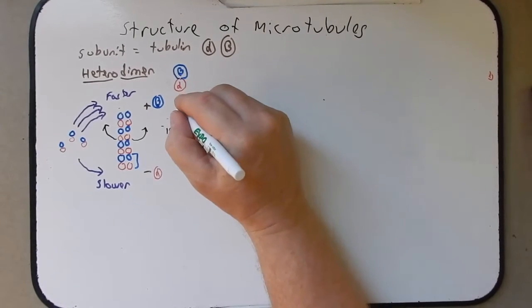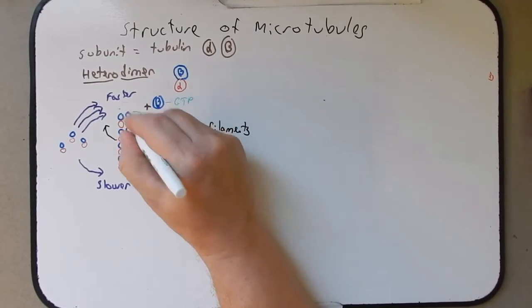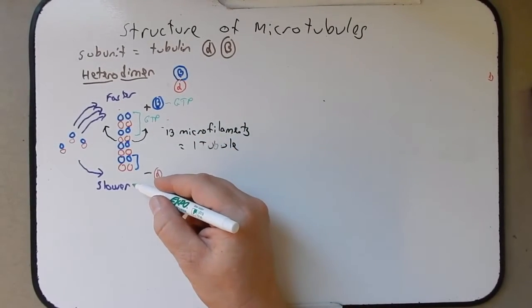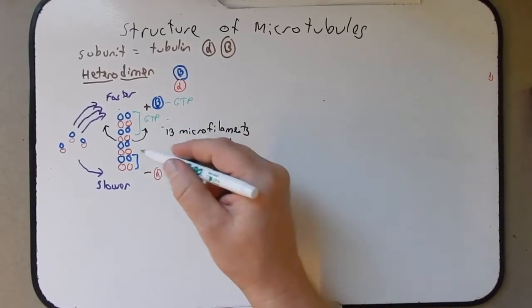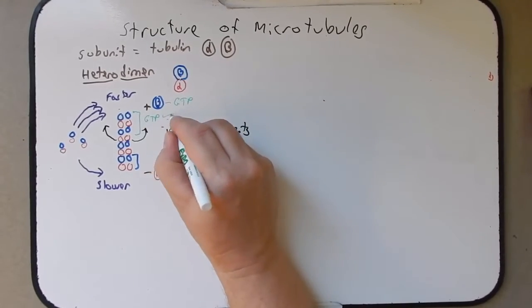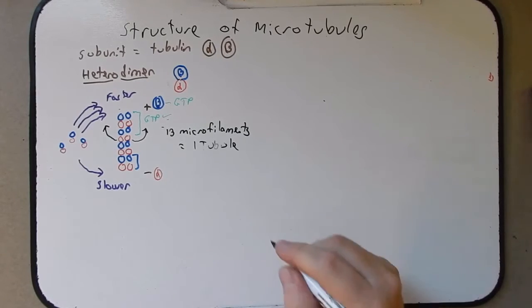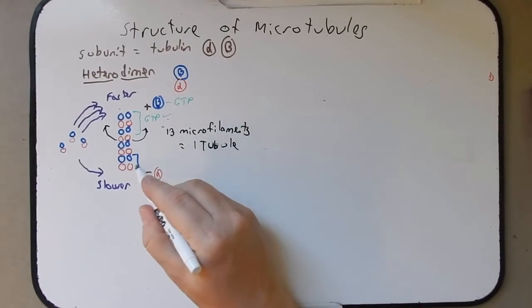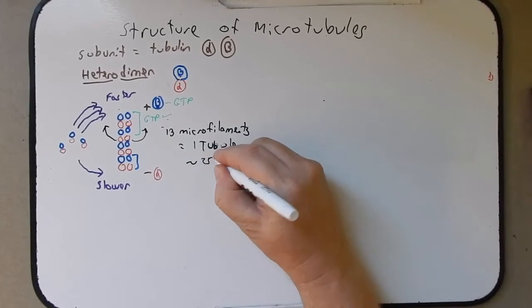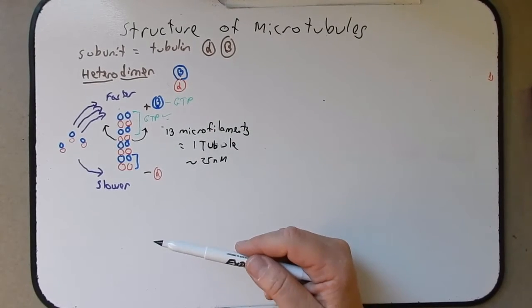The beta subunit can bind to GTP. The plus end of the microtubule typically contains a lot of GTP-bound beta subunits. As we move down toward the negative end, there are fewer beta subunits with GTP — often it's been hydrolyzed. To maintain the tip so it can keep growing, we need the GTP; GTP-bound beta tubulin allows it to grow faster at the positive end. The diameter of this tubule with its 13 microfilaments is approximately 25 nanometers. These are very dynamic tubules — they can be stabilized and they can be destabilized.